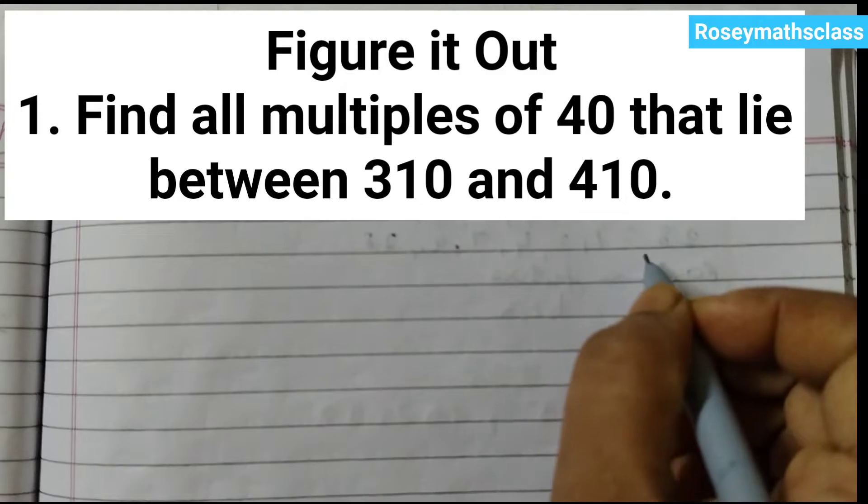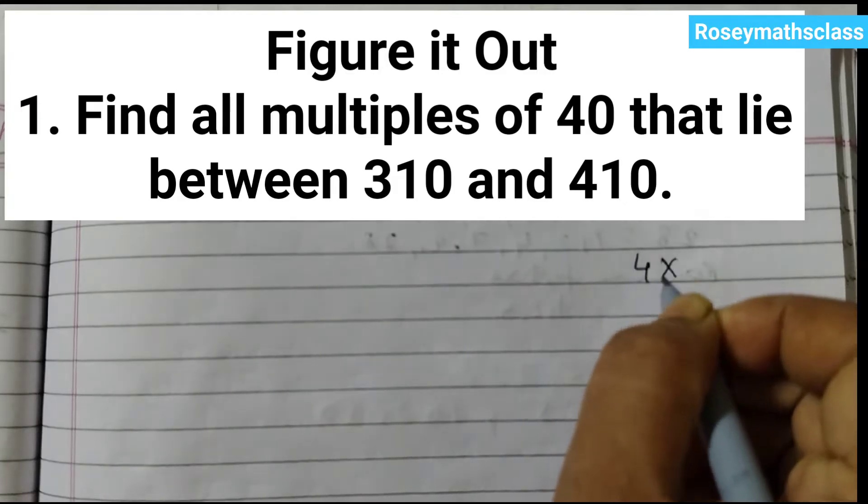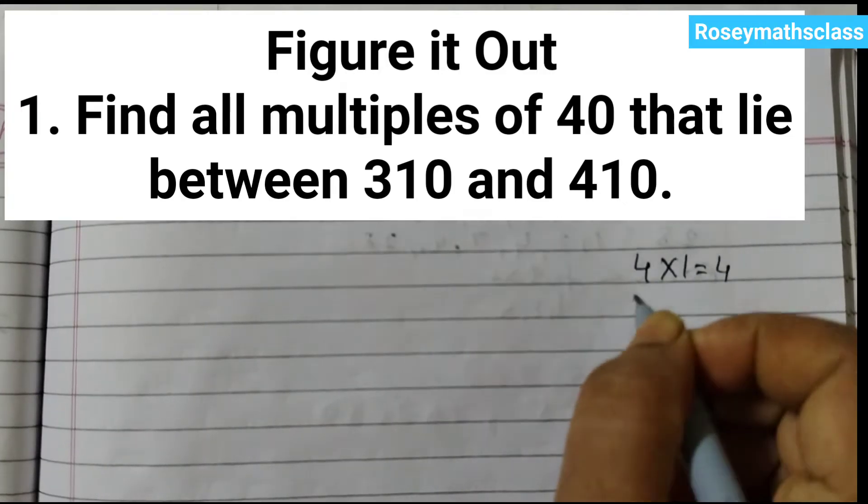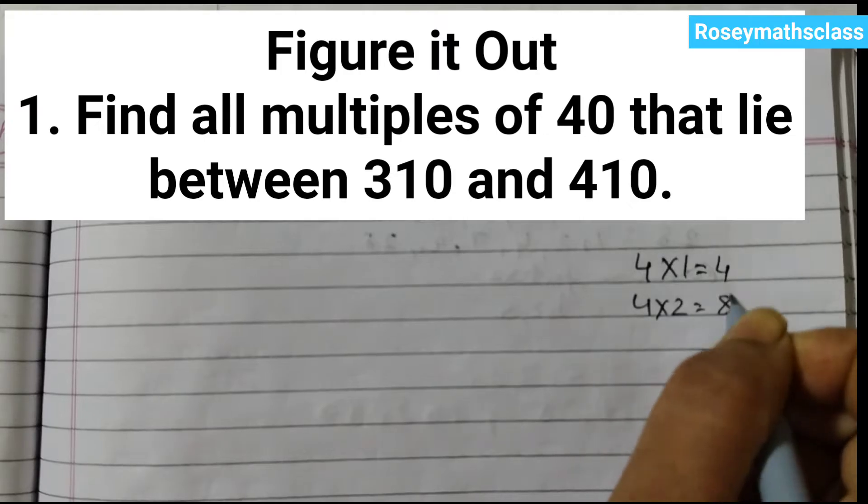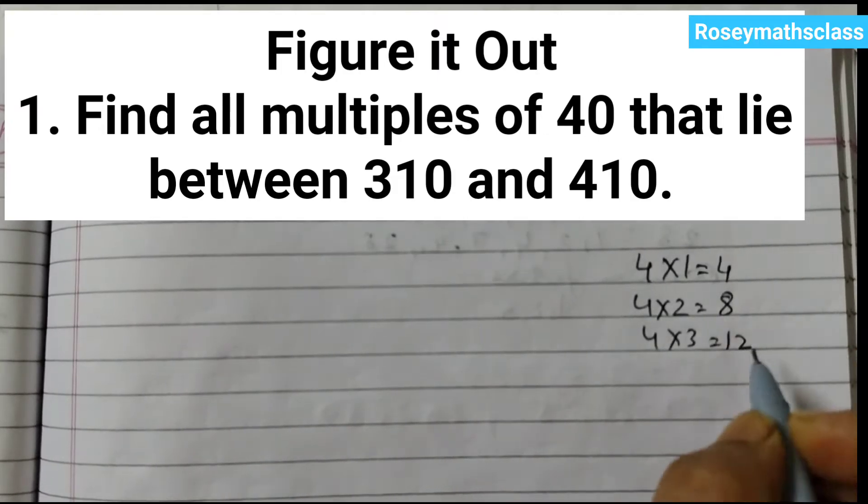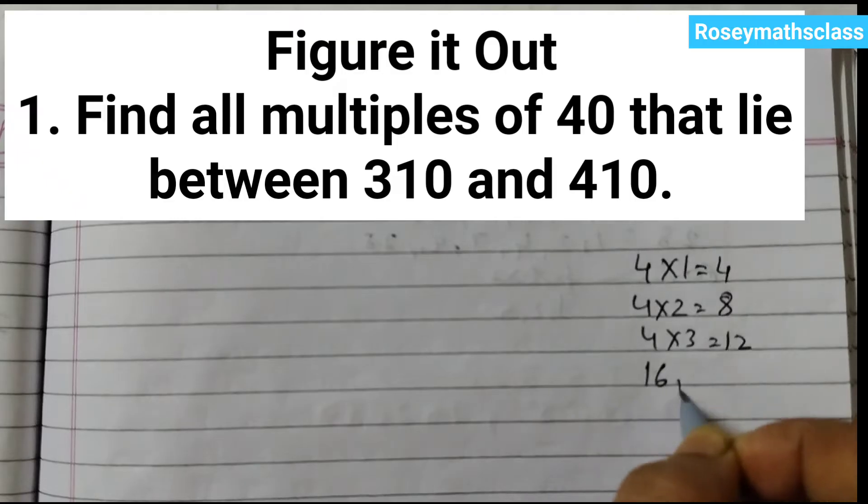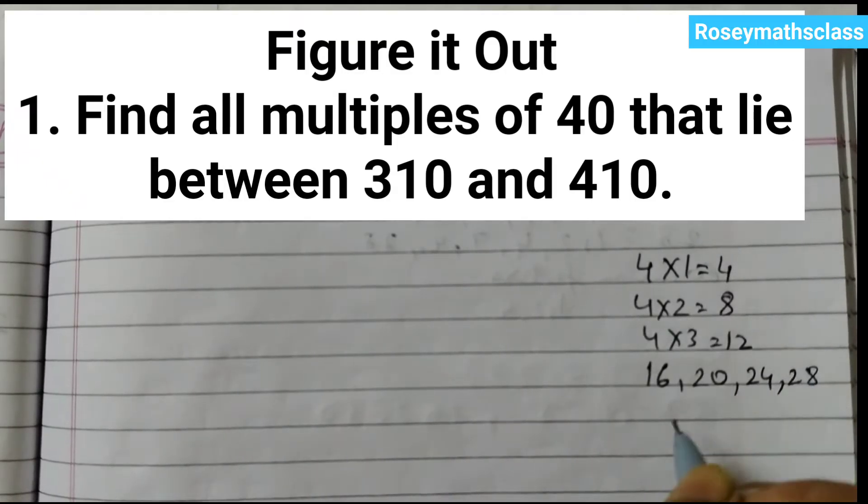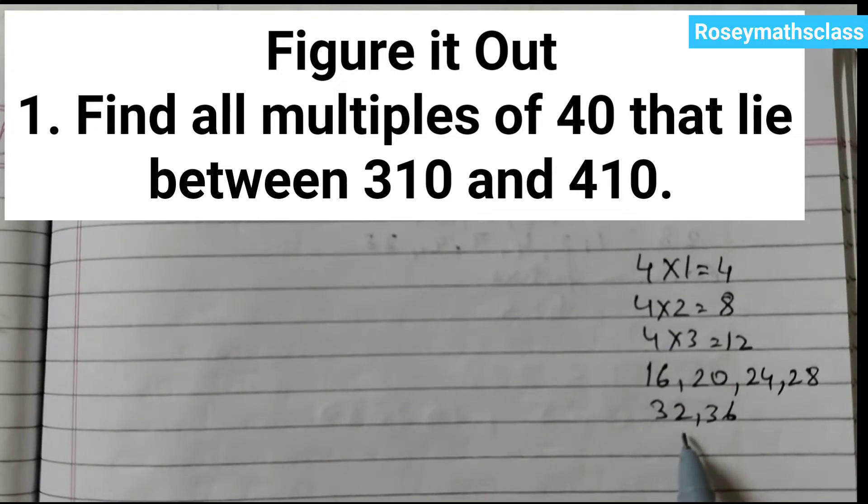If you see the table of 4: 4 into 1 is 4, 4 into 2 is 8, 4 3's are 12, 4 4's are 16, 4 5's are 20 and so on. 24, 28, 32, 36. Why I am writing the table of 4 is because we need to find the smallest multiple of 40.